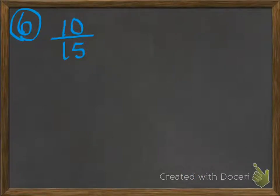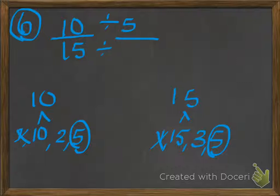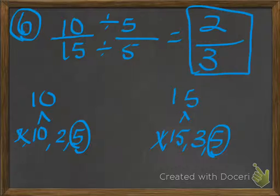Number 6: 10 fifteenths. Make that the simplest fraction you can. You should have found that the only factor 10 and 15 share in common other than 1 is the factor 5. So we're going to divide 10 by 5 and the 15 by 5 as well. 10 divided by 5 is 2, and 15 divided by 5 is 3. Our answer is two thirds.